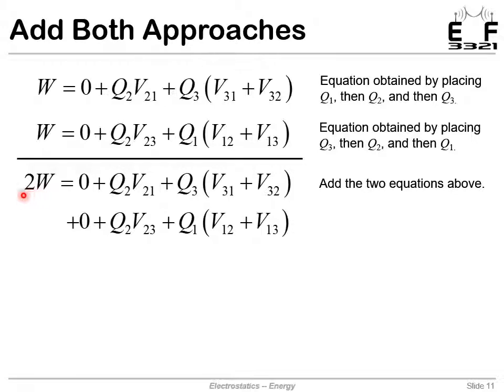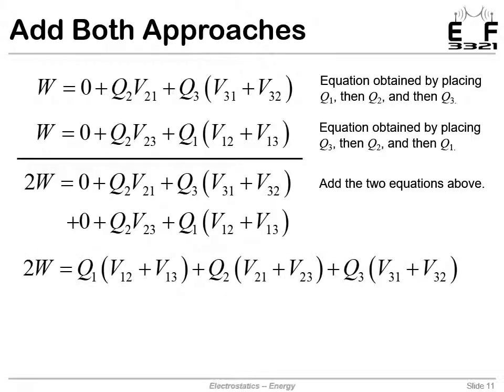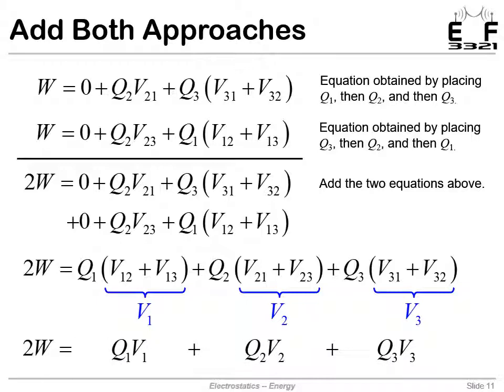On the left, we get two times the total work we've done, then our two expressions added together. We'll multiply everything out and collect terms on the common Q terms. Multiplying Q1, we have V12 and V13. Multiplying Q2, we have V21 and V23. Multiplying Q3, we have V31 and V32. We can replace the V12 plus V13 with just potential V1, and do it with our other two terms as well. This simplifies to: two times the total work equals charge one times the potential at point one plus charge two times the potential at point two plus charge three times the potential at point three.